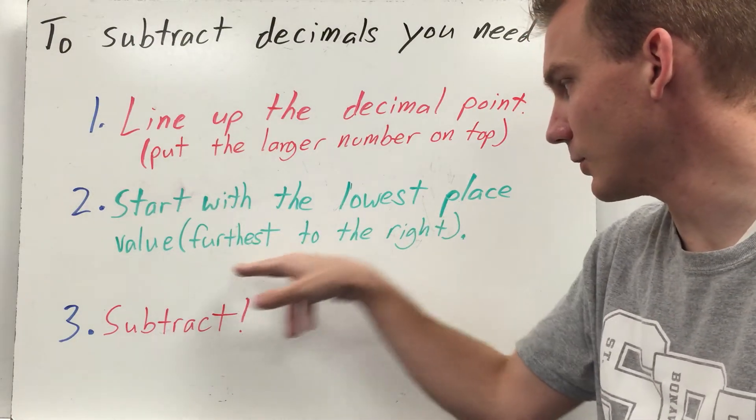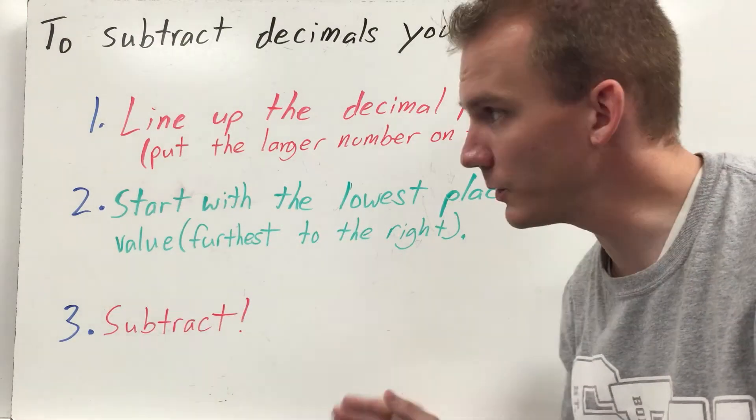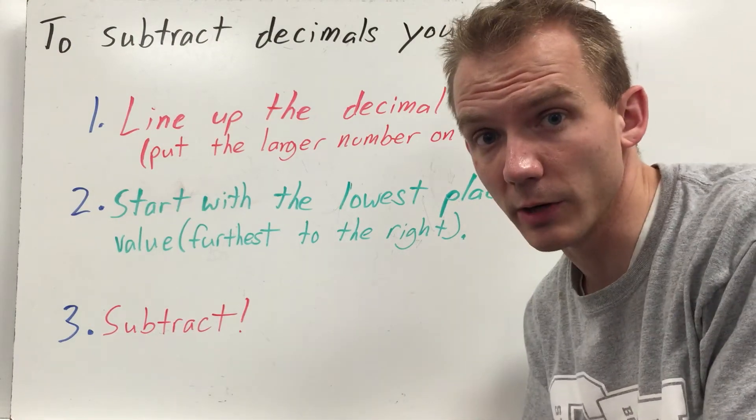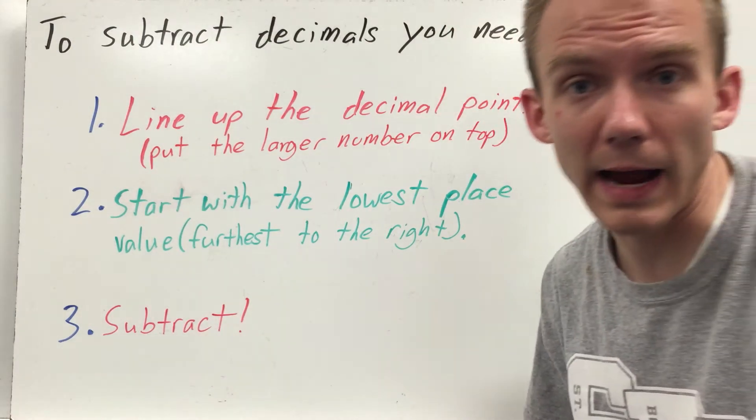Start with the lowest place value, furthest to the right. You're always going to go to lowest place value, which in this case is going to be the hundredths. That's as low as we're going, the hundredths. Subtract.